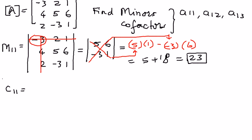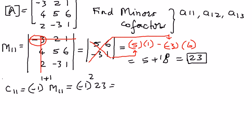The cofactor C11 is going to be equal to negative 1 raised to the power of 1 plus 1, times M11. Therefore, negative 1 raised to the power of 2, and M11 is 23. Since negative 1 raised to the power of 2 is positive 1, positive 1 times 23 is going to be equal to 23. And therefore, that is the value of C11. So we got the minor and cofactor of element A11.